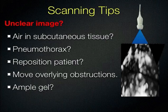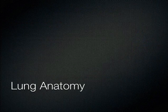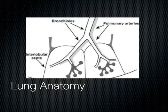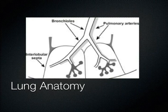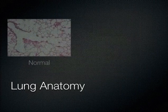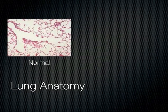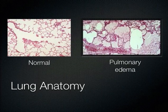Very quickly, let's review lung anatomy. We're interested in what's at the periphery of the lung. The terminal bronchioles branch into the alveoli, which are divided from each other by interlobular septi. A normal lung shows the terminal bronchiole and all of the little alveolar sacs. In pulmonary edema, air is replaced by fluid, and the interstitium is quite a bit thicker than in the normal lung — and that's important to note.